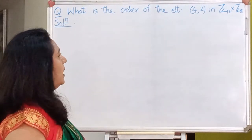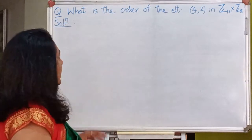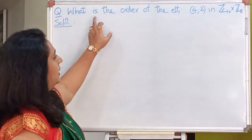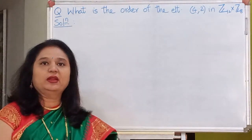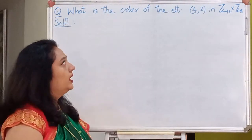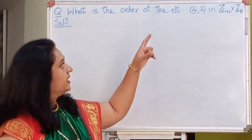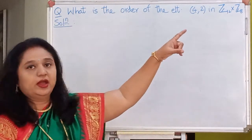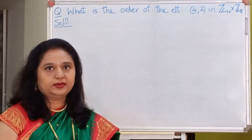So as a problem to begin with, let's determine the order of the element (4,2) in the direct product of Z12 with Z8.